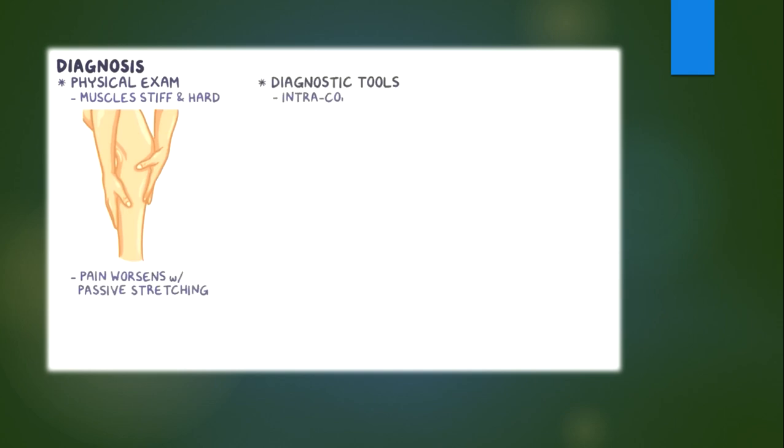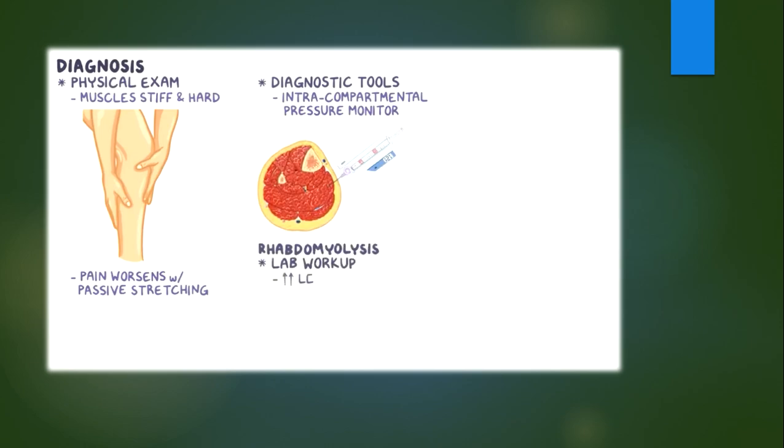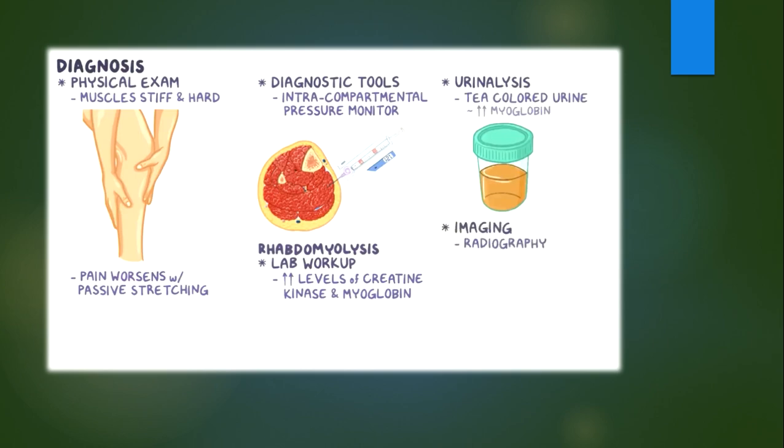Diagnosis includes physical examination, where the affected group of muscles appears stiff, firm, and feels hard like wood. The individual complains of pain that worsens with passive stretching of the muscles. The best diagnostic tools are the intracompartmental pressure monitors that can be inserted directly inside the compartment. When rhabdomyolysis develops, a laboratory workup can show elevated levels of creatine kinase and myoglobin, while urinalysis can show tea-colored urine due to high levels of myoglobin. Imaging techniques like radiography, CT, MRI, and ultrasound can help locate bone, muscle, and blood vessel injuries.